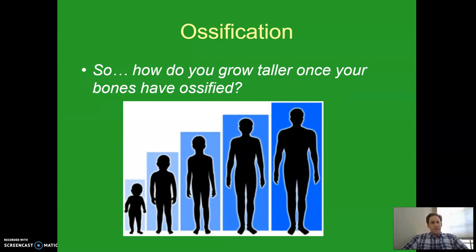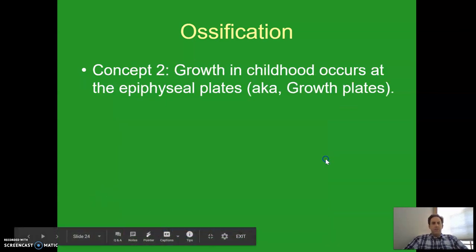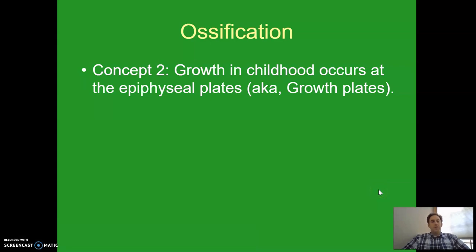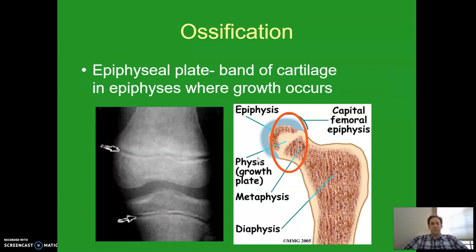This raises an interesting question: if in early childhood the bones are slowly turning to bone, how do you actually get taller? If you have bones as a two-year-old, how do you grow? Concept two is that growth in childhood occurs at what are called the epiphyseal plates — a more common term is growth plates, which you may have heard of. A lot of students have heard of growth plates but when asked what they actually are, they have no idea. So let's figure out what the growth plate actually is.